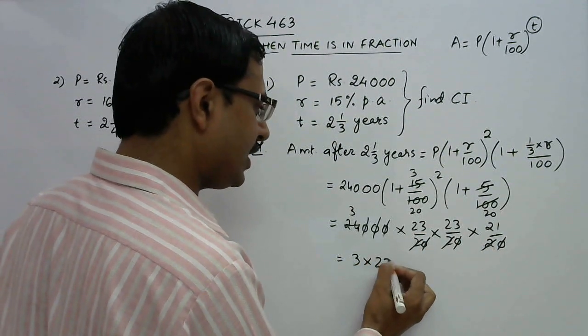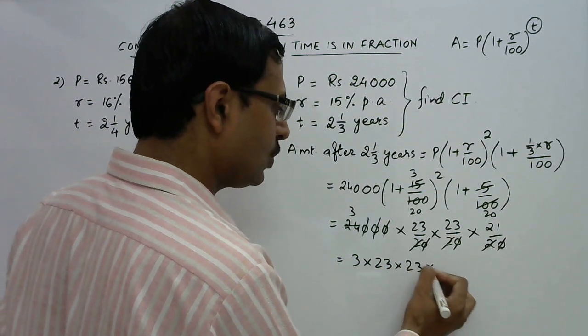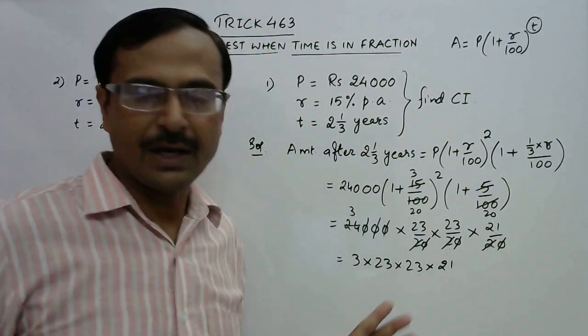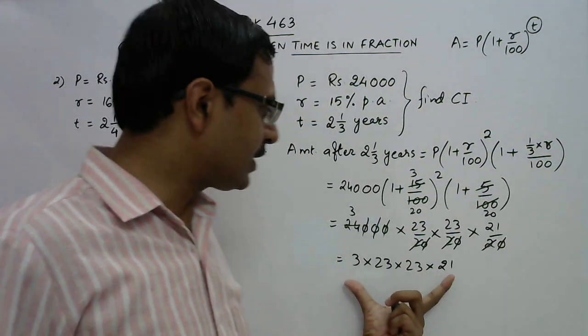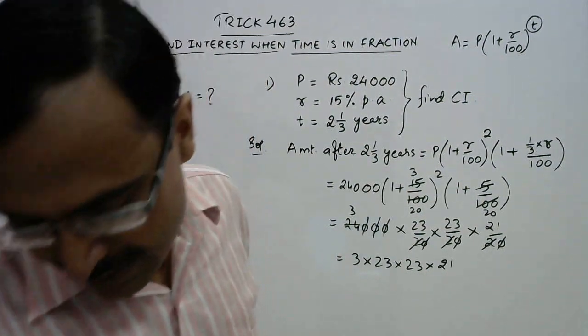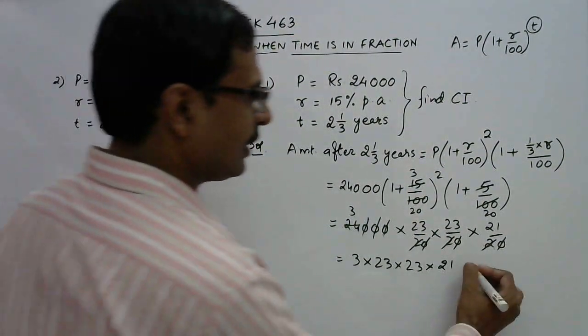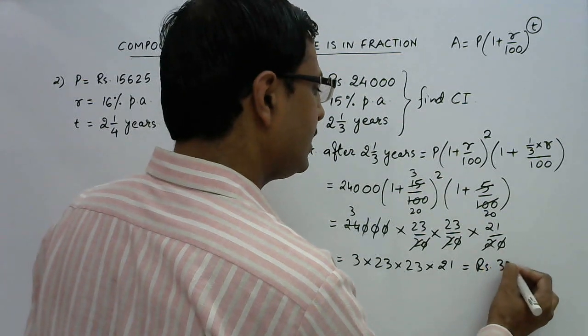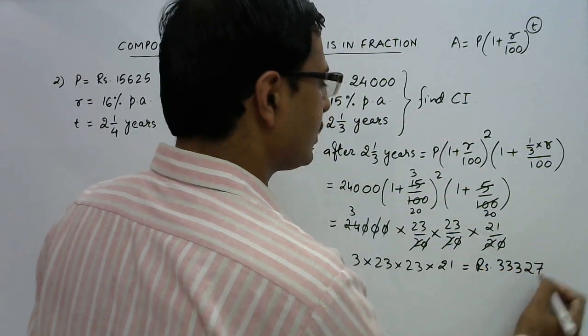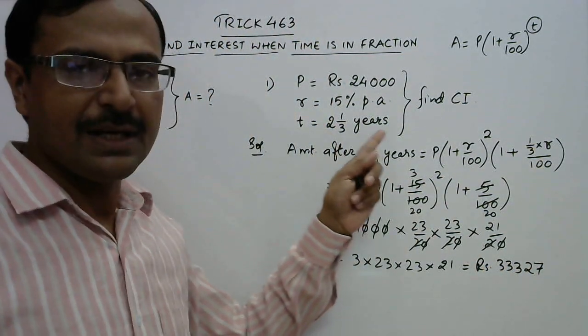So 3 into 23 into 23 into 21 this will be the amount. I have already calculated this for saving time. This will come out to be 33327. So this is the amount after 2 1/3 years.